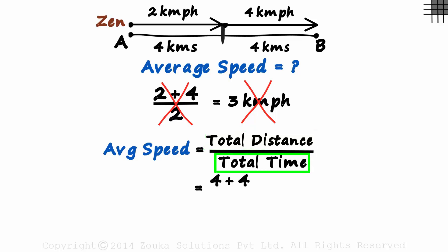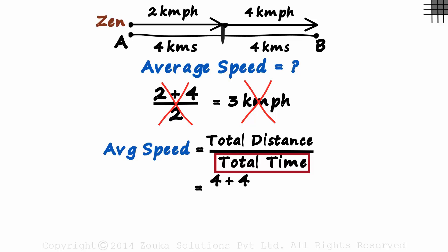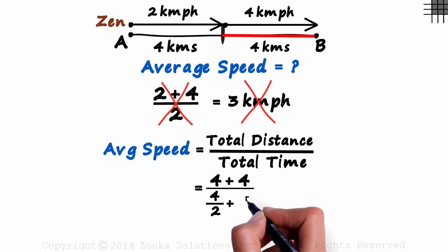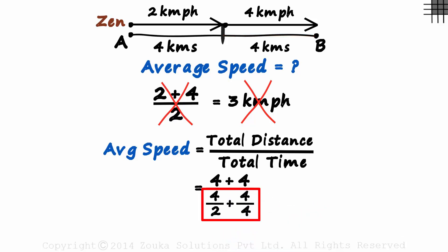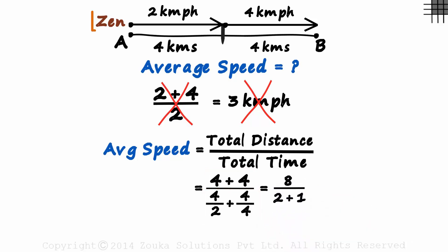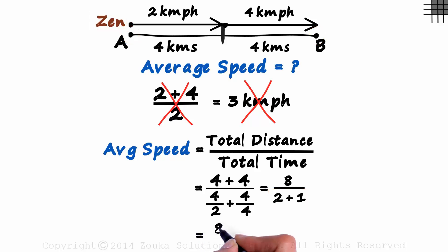What is the total time taken? We haven't been given the total time, but we can find that out. The time taken equals distance divided by speed, and the total time equals the sum of times taken to travel each part. The time for the initial 4 kilometers equals 4 over 2, and the time for the second part equals 4 over 4. The sum gives the total time: the numerator equals 8 and the denominator equals 2 plus 1. Zen takes 3 hours to travel from A to B, giving an average speed of 8 over 3, approximately 2.66 kilometers per hour.